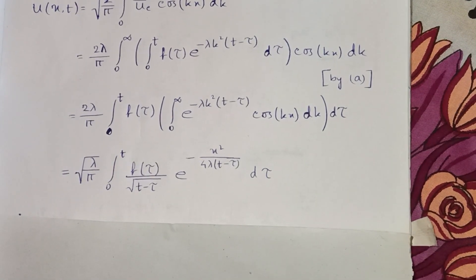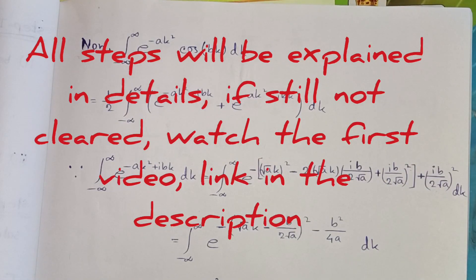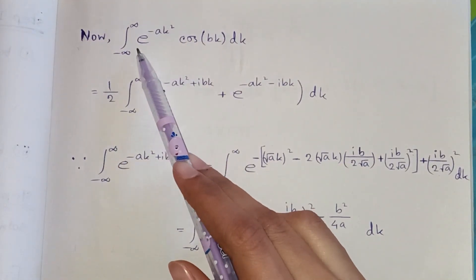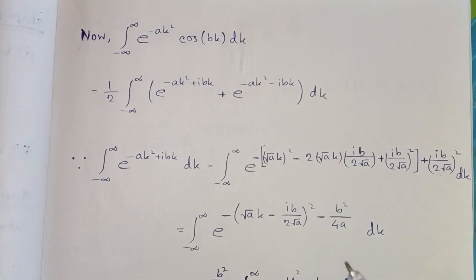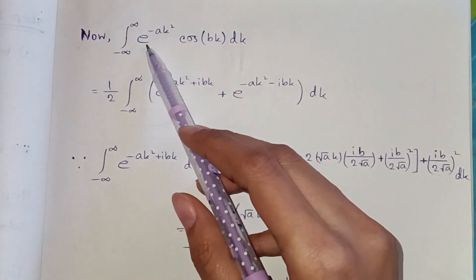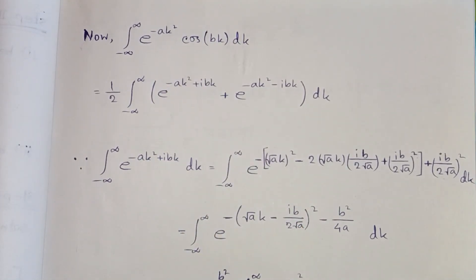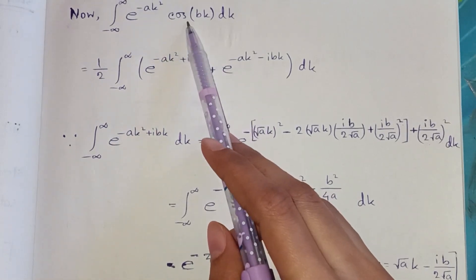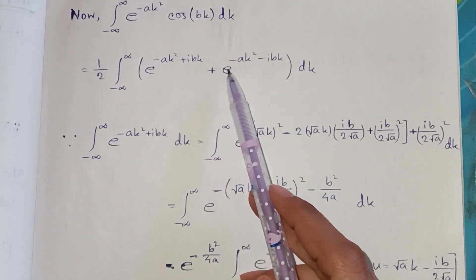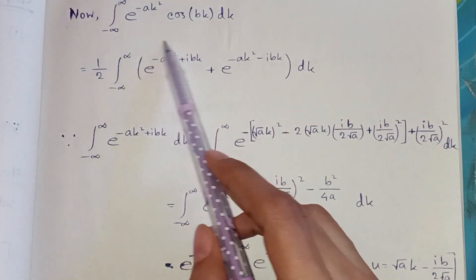We need to solve the inner integral first. Before going to that portion, I want to show some steps for how it is obtained — this will be a little calculated but we will not skip any step. We calculate the integral from −∞ to ∞ of e^(−ak²) · cos(bk) dk, where a and b are constants. We will clarify at the end why we start from −∞ and not 0. Using the identity cos(bk) = (e^(ibk) + e^(−ibk))/2, the integral splits into two parts.